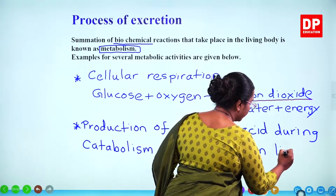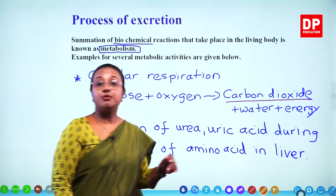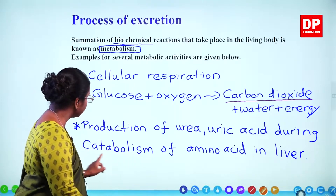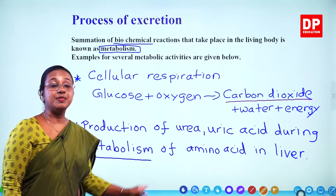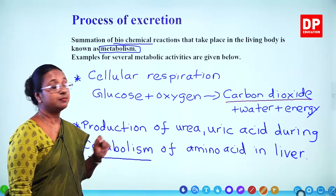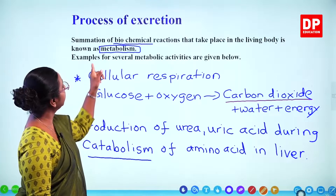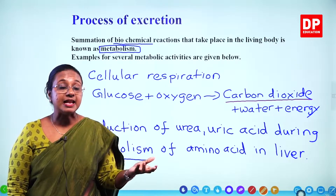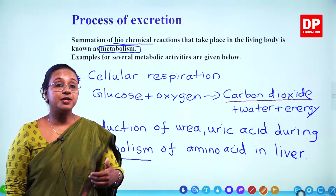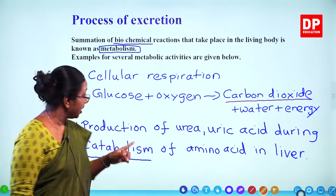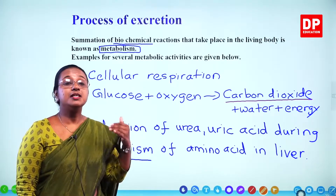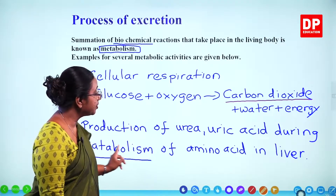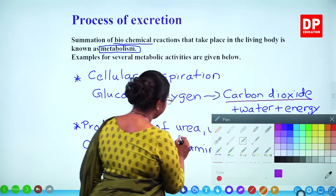The liver is attached to the digestive system. Inside the liver, amino acids undergo a process called catabolism. Under metabolism there are two types: anabolism, where simple components form complex compounds, and catabolism, where a complex compound is broken down to simpler components. During catabolism, urea and uric acid are produced.